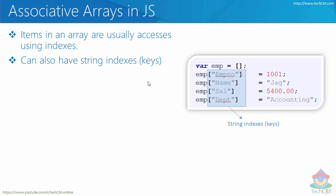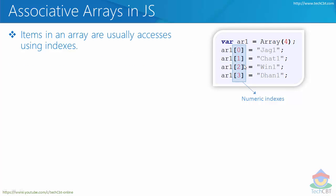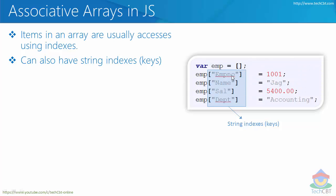There exists a particular beauty with respect to associative arrays in JavaScript. The most important thing to understand is that a JavaScript array can have string-based indexes. Earlier we saw that all indexes are numeric, but JavaScript arrays can also have string-based indexes. So we don't really need zero-based or numeric-based indexes — we also have the luxury of having string-based indexes.